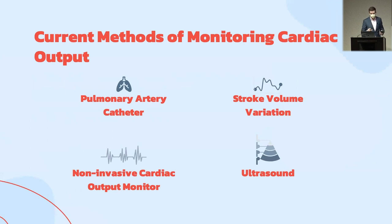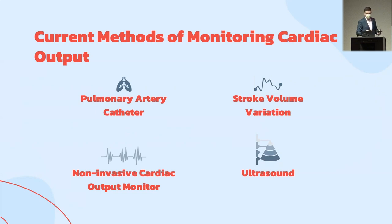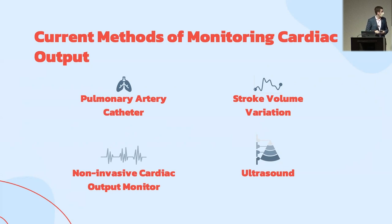Currently, in the olden days — I say that jokingly — the pulmonary artery catheter had been used as the gold standard for cardiac output monitoring, and still is in some instances. But in the ICUs I tend to work in, we don't have many people with a PA catheter anymore. Stroke volume variation and pulse pressure variation have gotten a lot of excitement as ways to trend cardiac output. There are also newer non-invasive cardiac output monitors using bioimpedance, and some other ways using ultrasound.